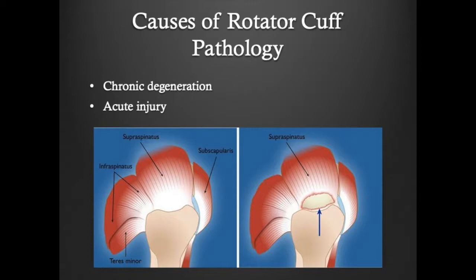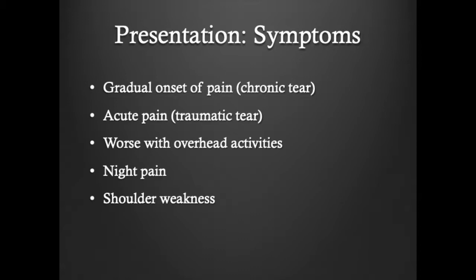Rotator cuff tears present with classic symptoms. In a chronic tear, this is typically the gradual onset of pain. In an acute traumatic tear, there is often acute pain following an accident with the inability to raise the arm. Pain is worse with overhead activities and causes shoulder weakness.